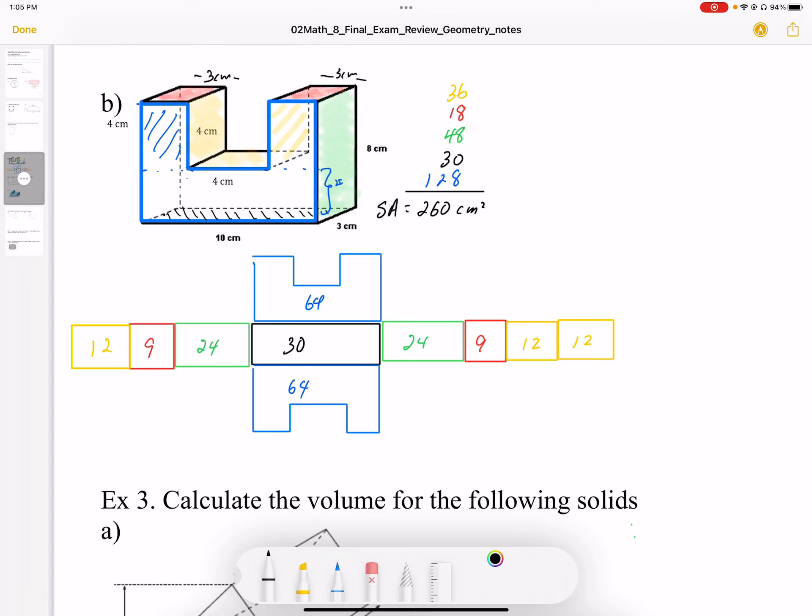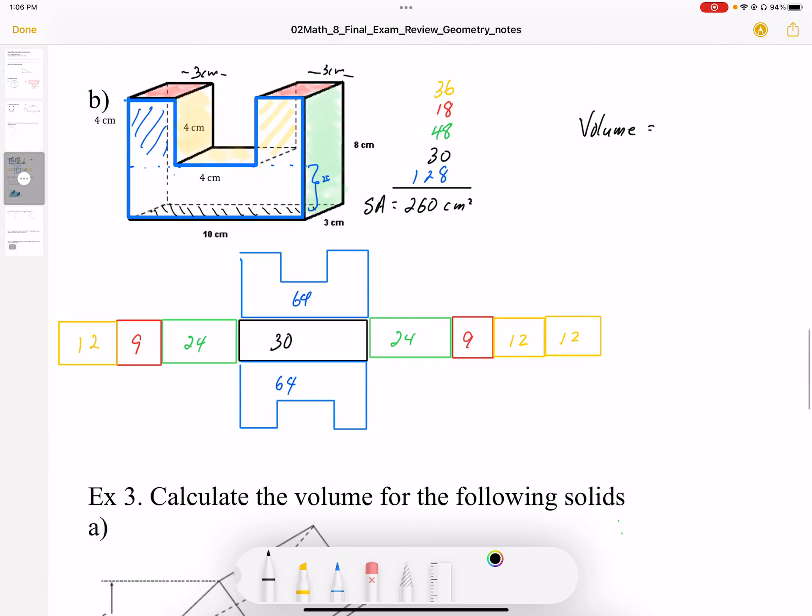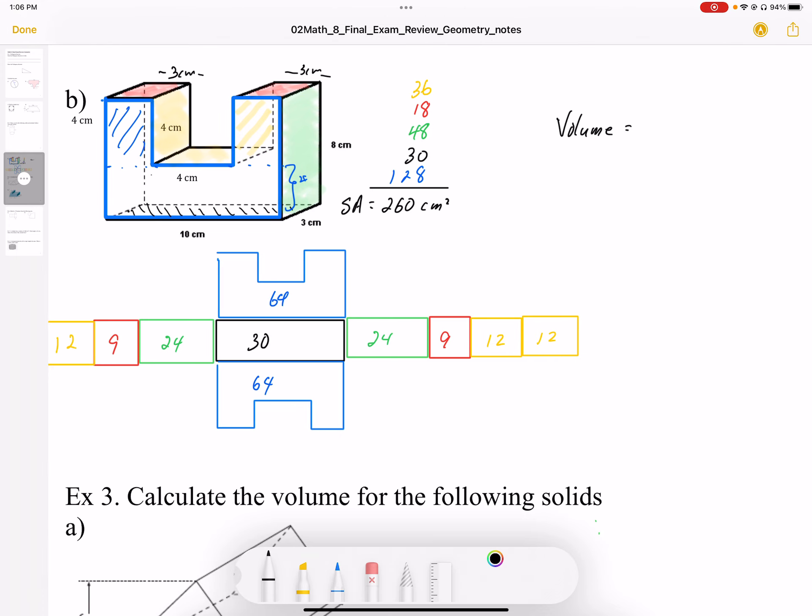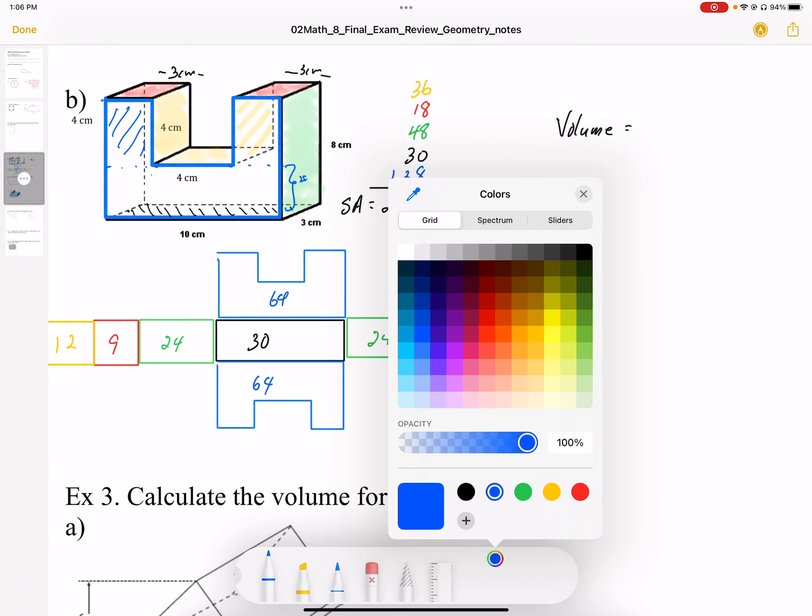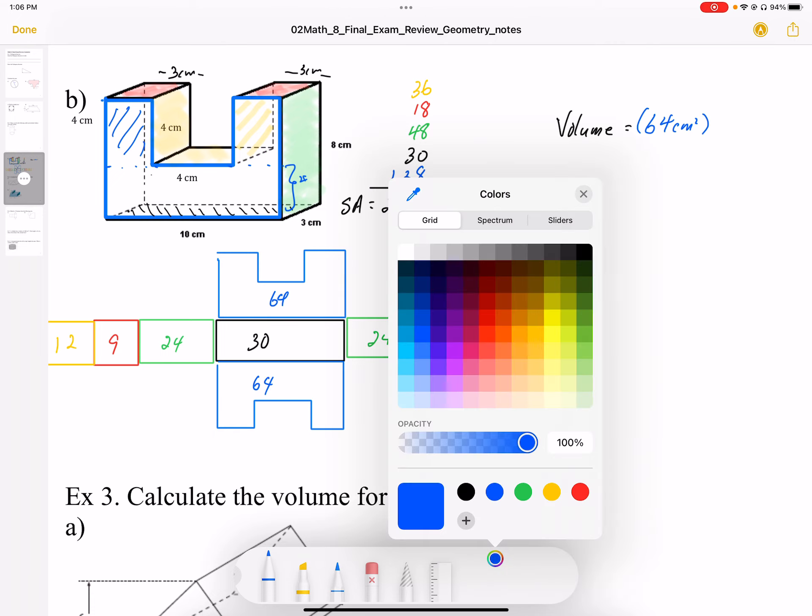Now for the volume, volume is going to be calculated by the area of the cross section times thickness. So I'm going to take the blue area, because I know that every slice is going to have the same cross sectional area. So I know that's 64 centimeters squared. And then I have my thickness is going to be 3 centimeters.